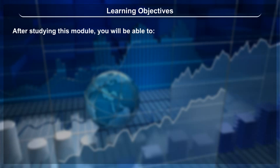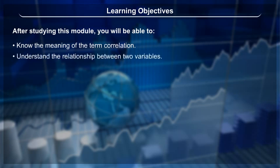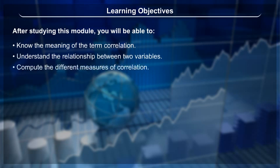Learning Objectives: After studying this module, you will be able to know the meaning of the term correlation, understand the relationship between variables, compute the different measures of correlation, and evaluate the degree and direction of the relationships.